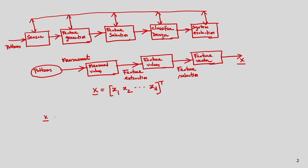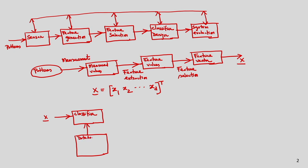Classification may be represented like this: the input is the feature vector and we are considering the classifier. We have a database — some information or some rules are available — and based on these rules and this information, I can do the classification.